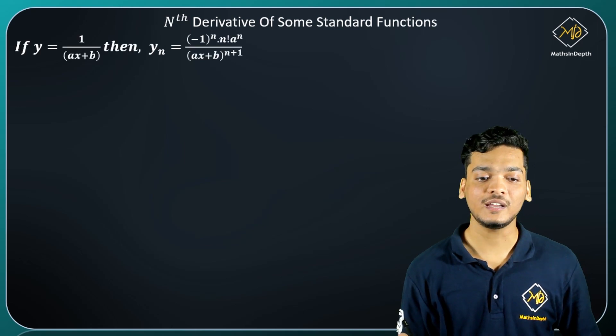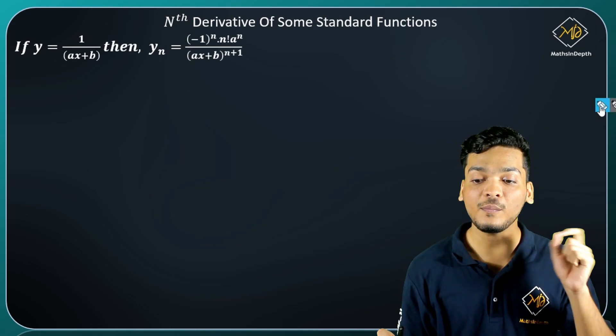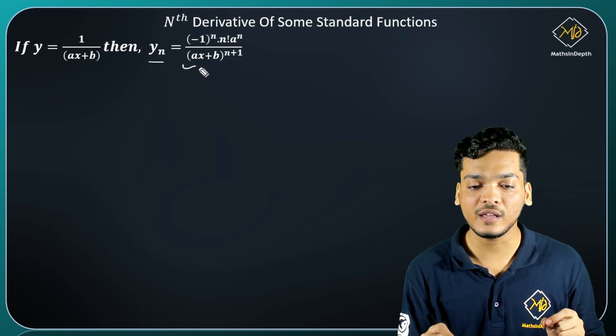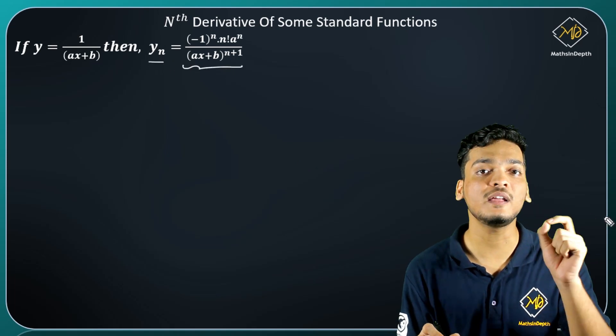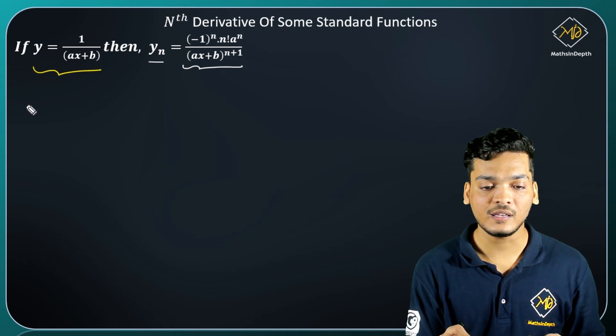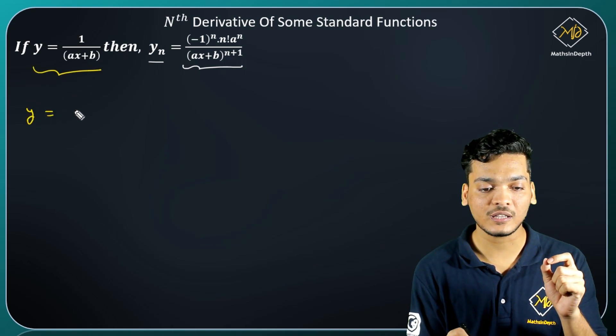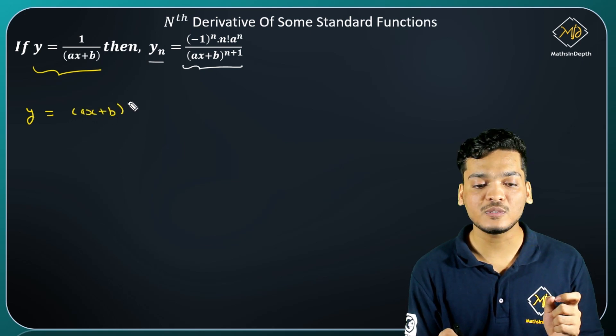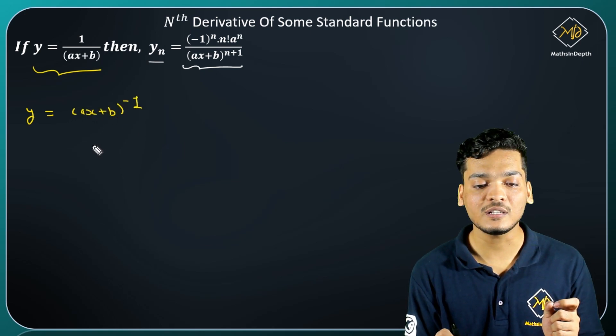Here we have to show that if y equals 1 upon ax plus b, then its nth derivative will be this particular expression. We have to observe this y expression. y is equal to (ax+b) raised to minus 1.